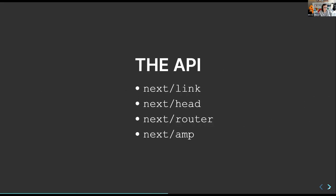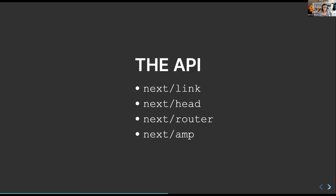The API for Next.js is pretty simple — these are the four main ones people use most. There's next/link, which is a glorified anchor tag that wraps around links so you can link between pages, and it does client-side transitions with preloading, so they're super fast. Next/head is a React component for the HTML head — you can programmatically change your title, meta tags, or anything like that. Next/router is a React hook that lets you get query parameters, the current path, and do redirects and navigation. And next/amp allows you to generate Google AMP pages.